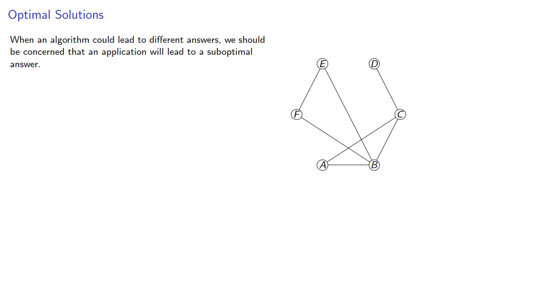When an algorithm could lead to different answers, we should be concerned that an application will lead to a suboptimal answer. Our original graph wasn't Hamiltonian, but we made it Hamiltonian by adding four edges.